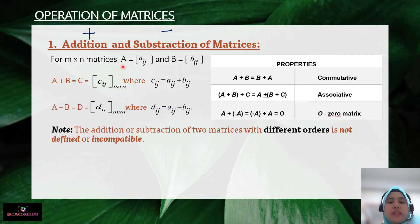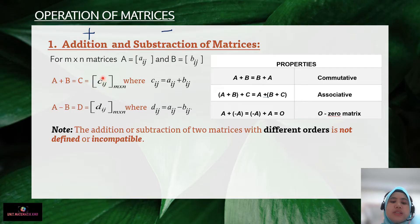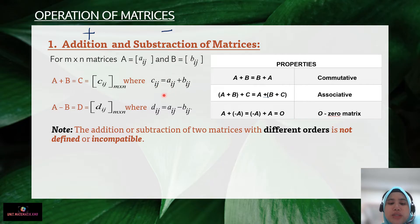You have matrix A and matrix B, with each element called aij and bij respectively. When you add A plus B to get C, the element cij is obtained by adding aij plus bij.